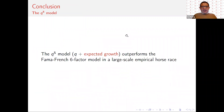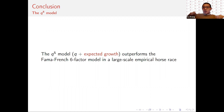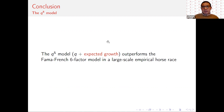In conclusion, in this paper we show that the Q5 model outperforms the Fama-French six-factor model in a large-scale empirical horse race. We highlight the importance of our new expected growth factor, especially in the presence of an intangible economy in which intangible investments are becoming more and more important — our expected growth factor captures intangible investment. Thank you.